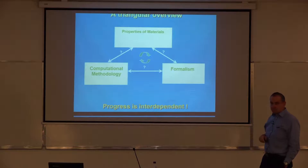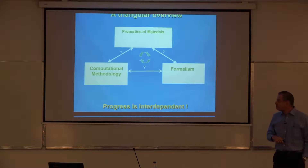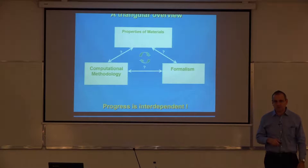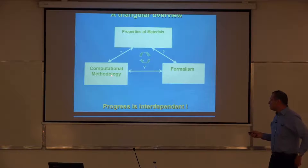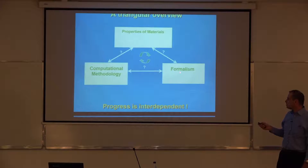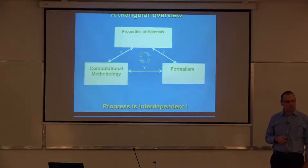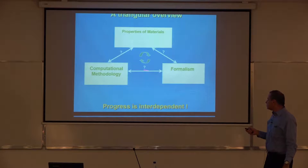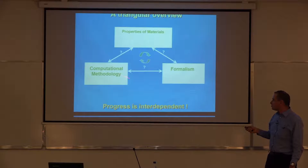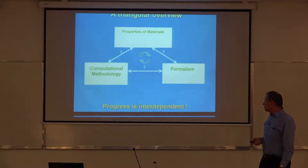As a general rule, if I think about computational material science, I tend to think of it as a triangle which has three important corners. One is obviously the properties of materials — what is it that we wish to calculate, of which material, and why. Second is the formalism — what equations do we have to solve, and are they good enough? And the third corner is the computational methodology — how are we actually going to do that in terms of the underlying mathematics and computer software that can actually do that in a reasonable amount of time on a reasonable machine?